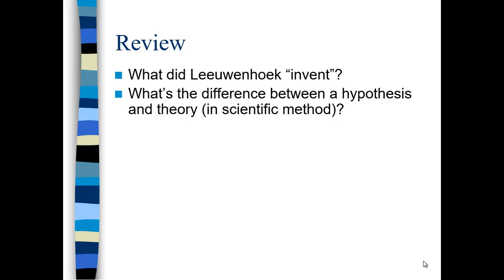What's the difference between a hypothesis and a theory? A hypothesis is a tentative explanation of a phenomenon based on observation, and it must be testable. Once a hypothesis has been tested over time, then we have a theory. A theory is a hypothesis which has been affirmed — not proven. If it's proven, it's a law. A theory is a hypothesis that has been affirmed by a large body of data taken over a long period of time.